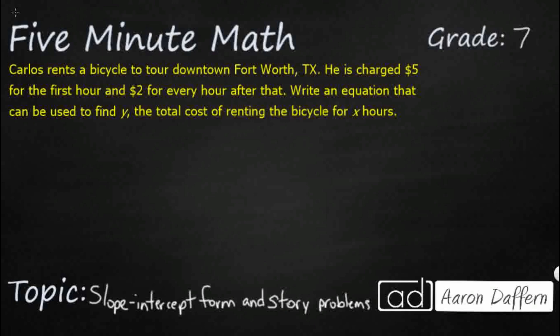So we have a pretty simple story problem here. We're renting a bicycle to tour downtown Fort Worth, Texas. We're charged $5 for the first hour, and then $2 for every hour after that. It's pretty typical. It's a big fee to start with, and then a smaller fee to continue. So we're supposed to write an equation that can be used to find y, the total cost of renting the bicycle for x hours.